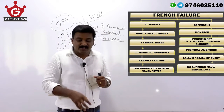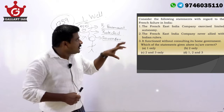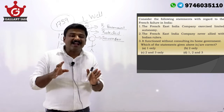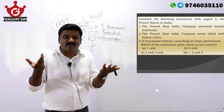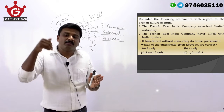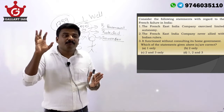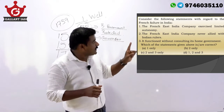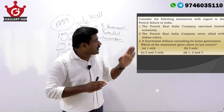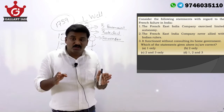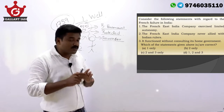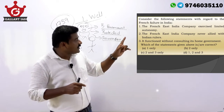Now the question on French failure in India. Statement 1 — French East India Company exercised limited autonomy — correct, it was a dependent company acting as a state department with limited decision-making power, always needing final permission from Paris. Statement 2 — French East India Company never allied with Indian rulers — wrong, it allied several times. Statement 3 — it functioned without consulting the home government — also wrong. Only Statement 1 is correct.